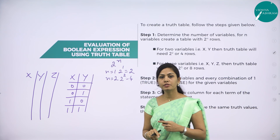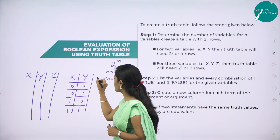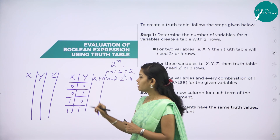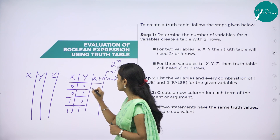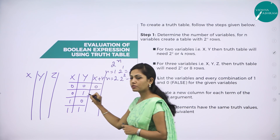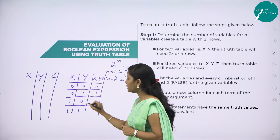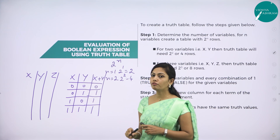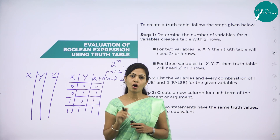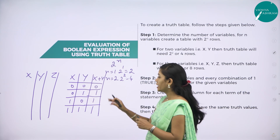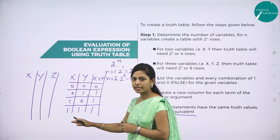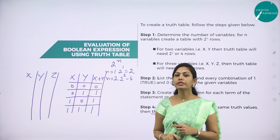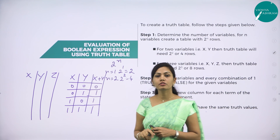I will give one example — a truth table for the OR operator. OR operator means we are using logical addition. So 0 plus 0 is 0, 0 plus 1 is 1, 1 plus 0 is 1, and 1 plus 1 is 1. This is the truth table for the logical OR operator. If two statements are identical, then they are called equivalent.